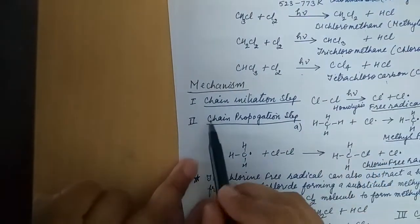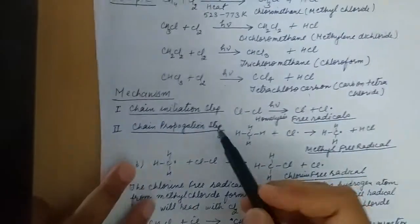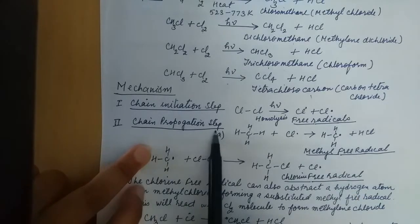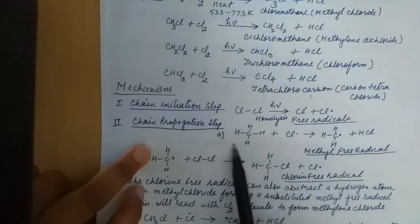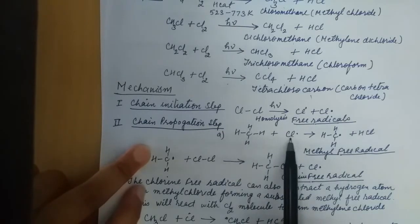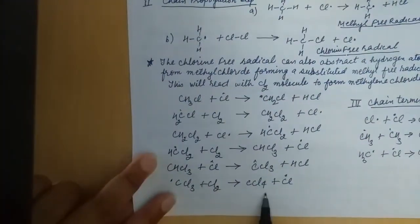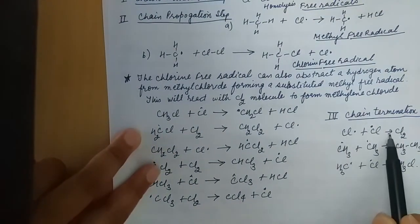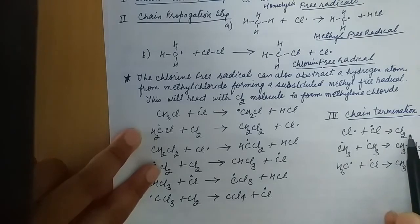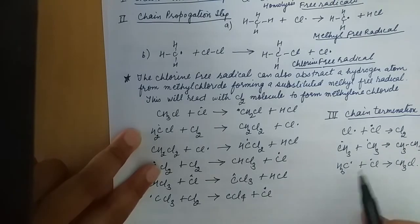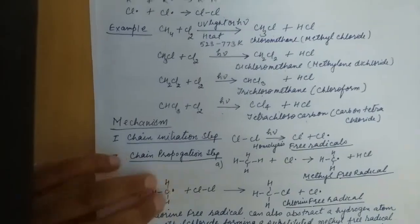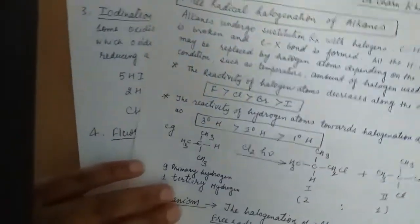Looking at the mechanism, there are three steps: chain initiation, propagation, and termination. In chain initiation, homolytic cleavage of Cl₂ gives chlorine free radicals. In chain propagation, methane has four hydrogens which are substituted one by one by chlorine free radicals, ultimately giving CCl₄. In chain termination, chlorine free radicals form Cl₂, methyl and methyl free radicals form ethane, and methyl and chloride free radicals form methyl chloride. This is all about the free radical halogenation of alkanes. Thank you.